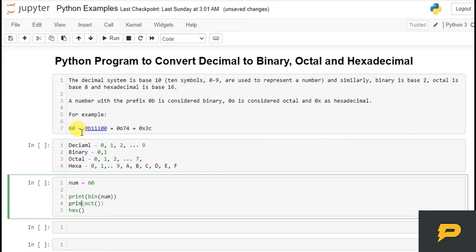Similarly, I print this one and in octal I give my number. Similarly, I print this one and I give num into my hexadecimal. So let's see.